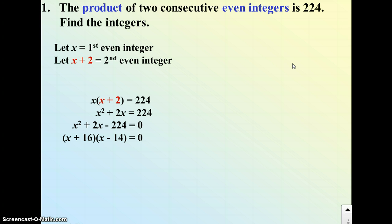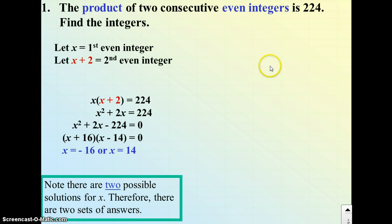Set each factor equal to 0, and solve those simple equations. So x can be either negative 16 or positive 14. So this word problem has two solutions. Let's check them both out. So there's two possible solutions for x: negative 16, positive 14.